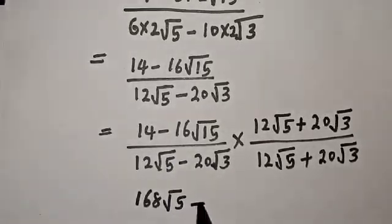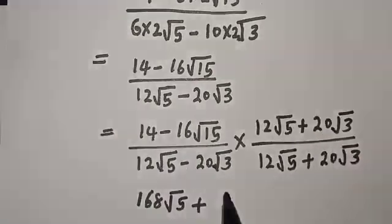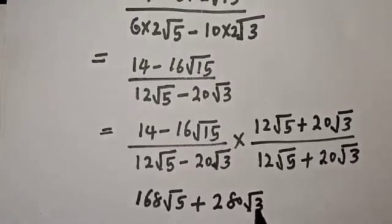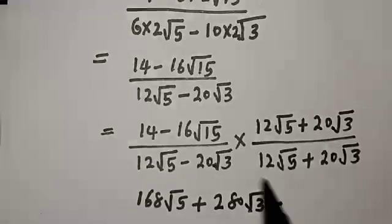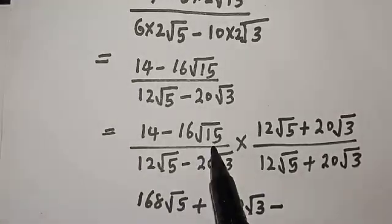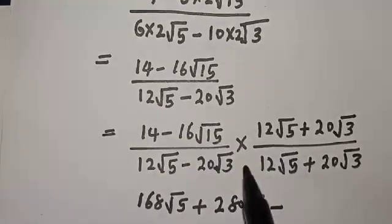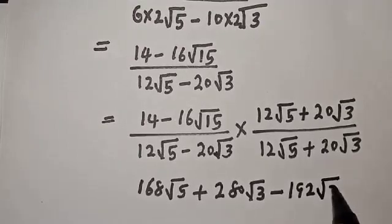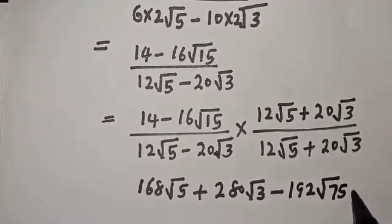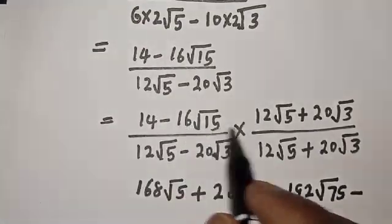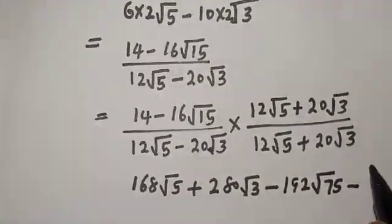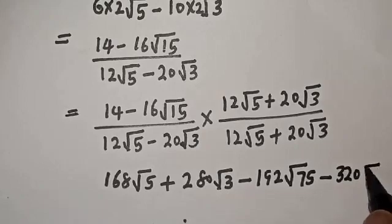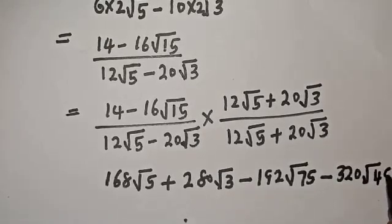Now let's multiply out. We have 14 times 12, which is 168 root 5, plus 14 times 20 root 3, which is 280 root 3, then minus 16 root 15 times 12 root 5, which is 192 root 75.